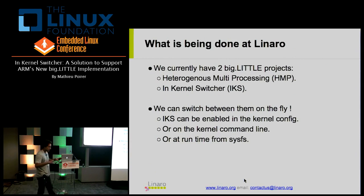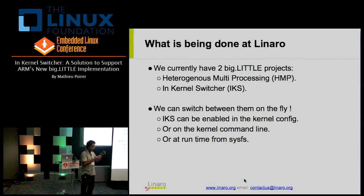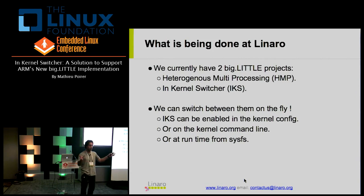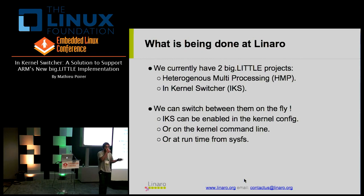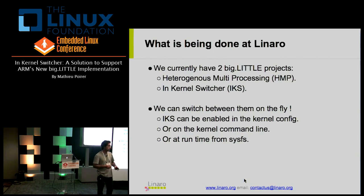We currently have two projects in parallel: HMP (heterogeneous multiprocessing) and IKS. The cool thing is they coexist in the same tree, so one can move from one scheme to another on the fly. It's enabled in sysfs — you can turn on the IKS solution whenever you want, or switch it off to run different benchmarks. The in-kernel switcher can also be turned on at boot time from the kernel command line or via kernel config at compile time.